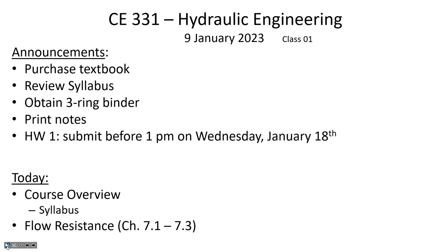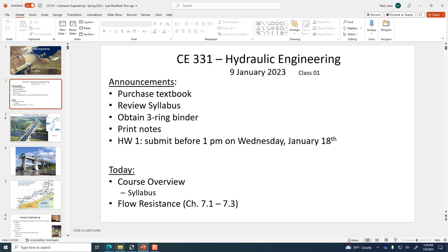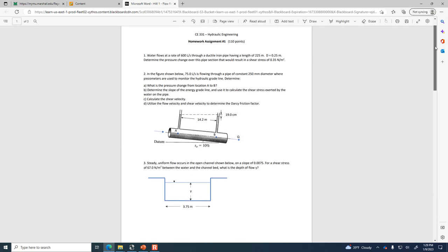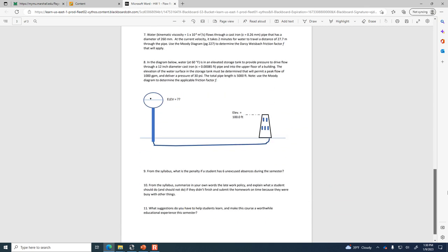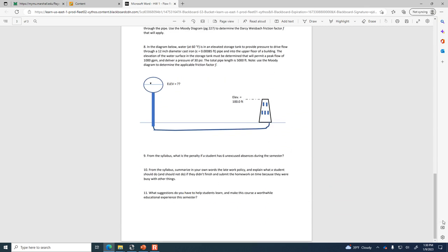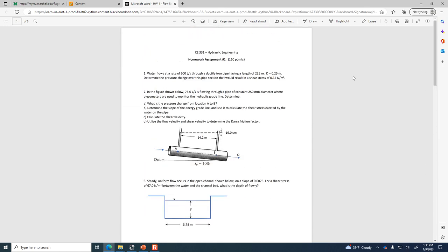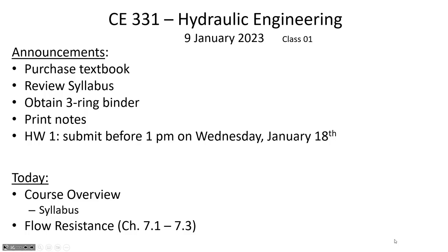We're going to begin each semester with an announcement slide, each class meeting. So the to-do list: you need to purchase the textbook, review the syllabus that I've just handed out to you, get a three-ring binder to start putting these materials into. I suggest that you print the notes, and then homework one is posted right now on Blackboard. I don't think I ever did finally get around to showing you the assignment itself. Here's the assignment. Some of them are calculation, problem-solving type questions. Some of them are questions related to the syllabus. So that's due next Wednesday, due by 1 p.m. on Wednesday.